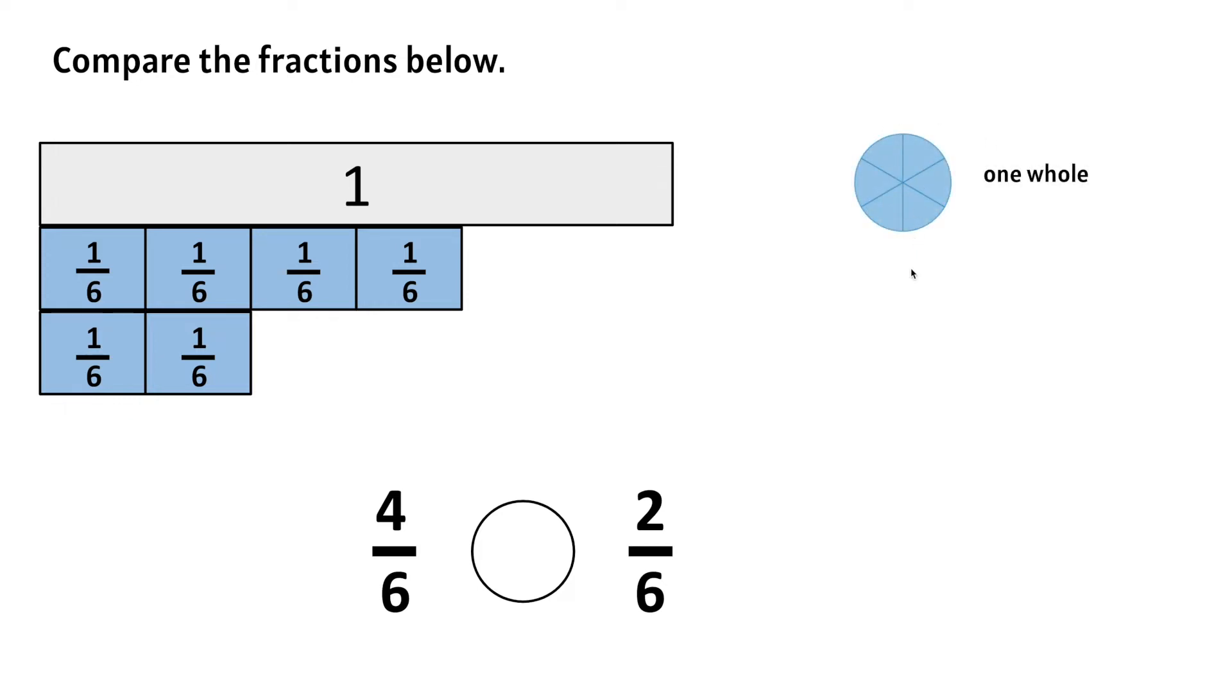Here we have one whole pie. Now this pie only has 4 sixths: 1, 2, 3, 4 out of 6 equal parts. This pie only has 2 sixths, or 2 out of the 6 equal parts.